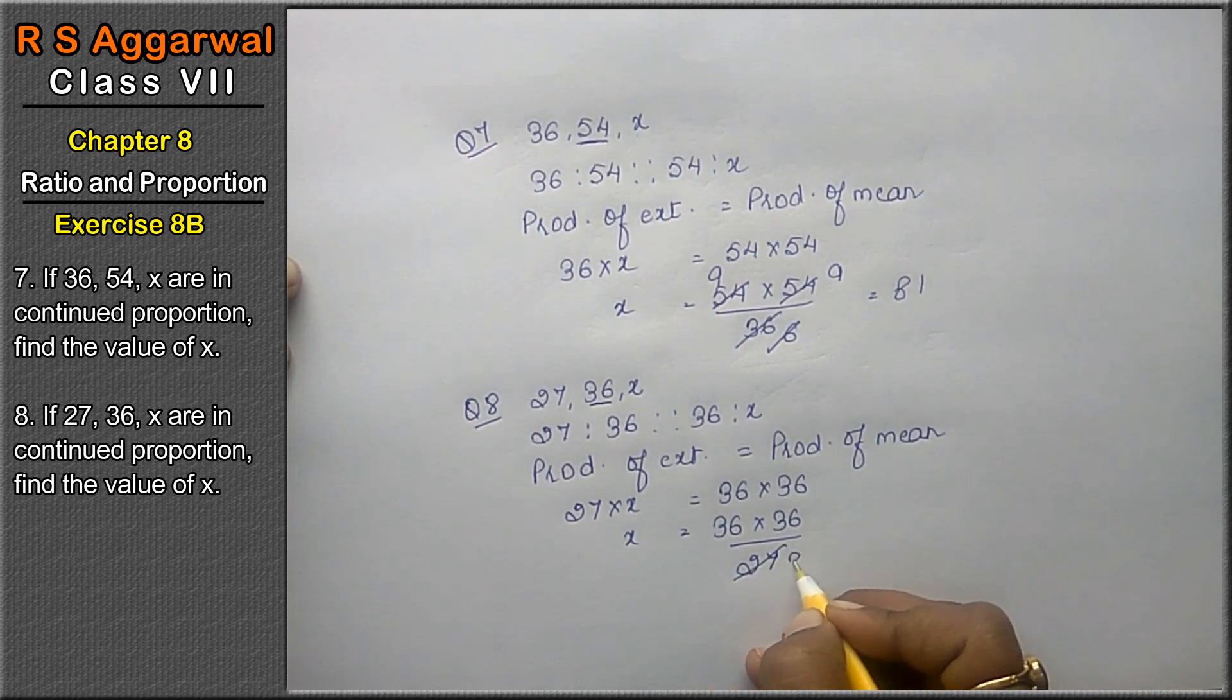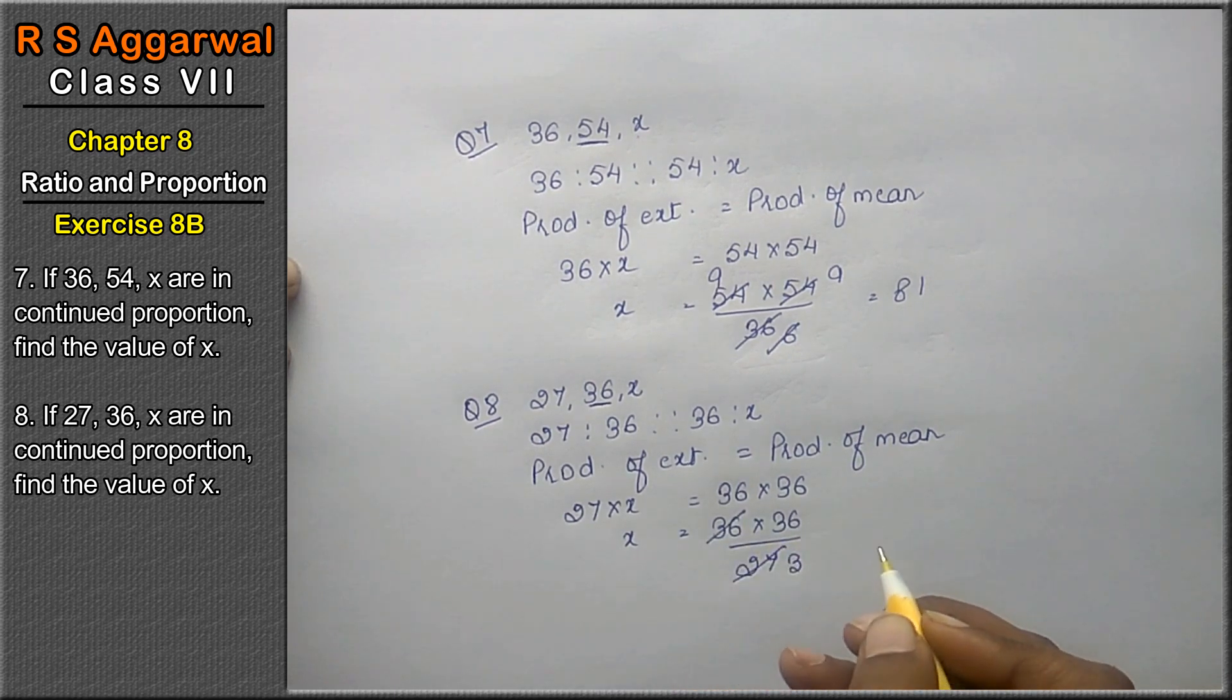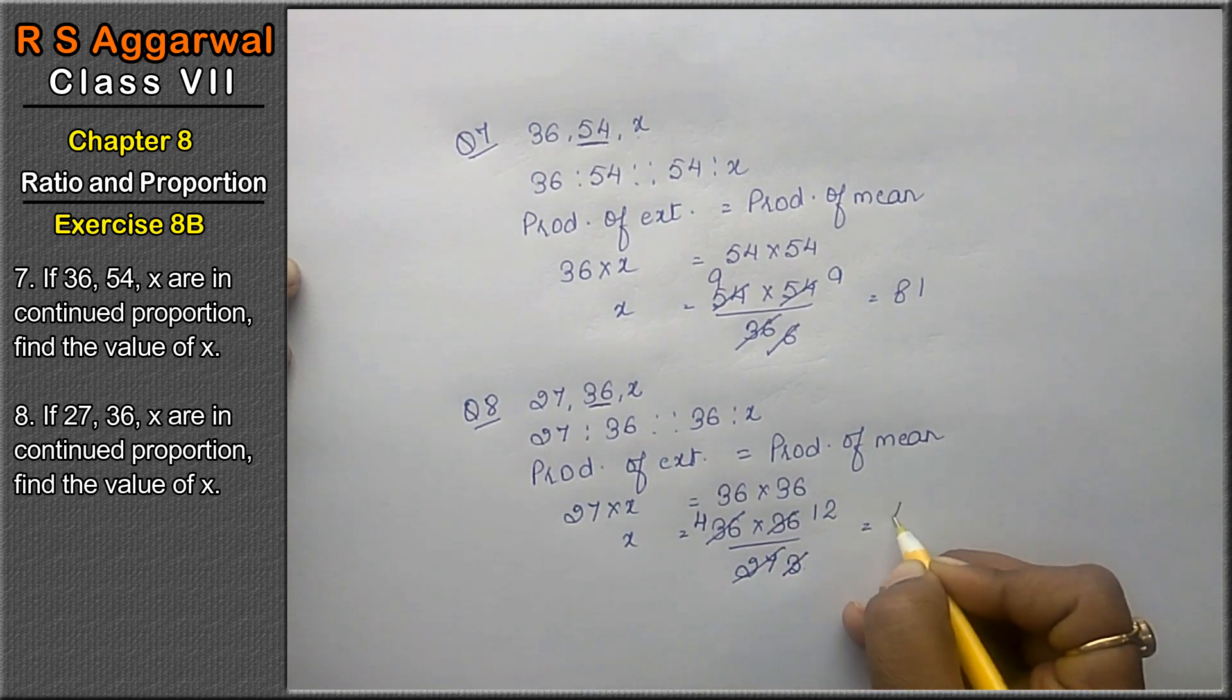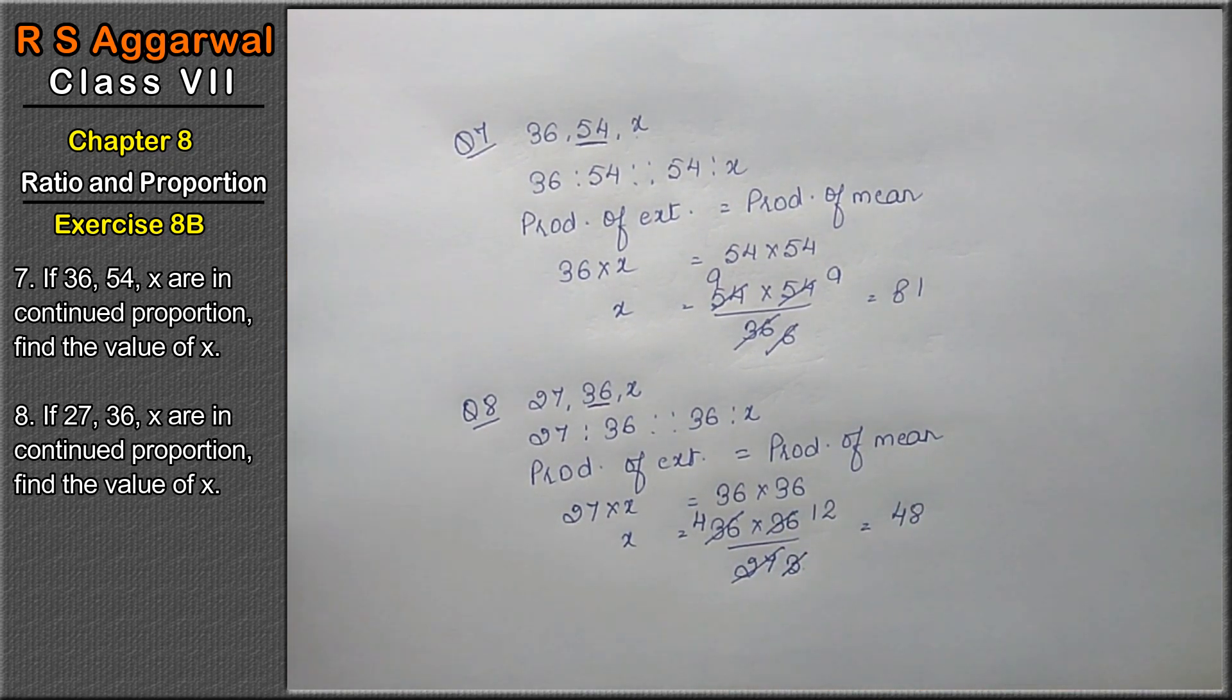Now 9 threes are 36... Sorry, 9 threes are 27. 9 fours are 36. 3 ones are 3, 3 ones are 3, 3 twos are 6. 12 fours are 48 is the answer.